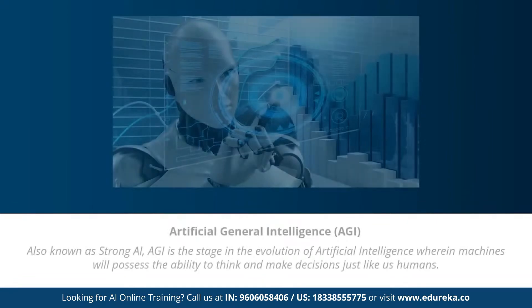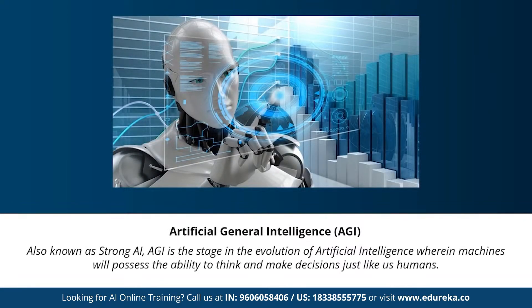Artificial general intelligence, also known as strong AI, is the stage where machines will possess the ability to think and make decisions just like human beings. There are currently no existing examples of strong AI, but it's believed we will soon create machines as smart as humans. Strong AI is considered a threat to human existence by many scientists, including Stephen Hawking.